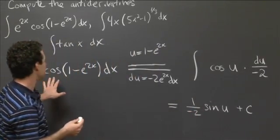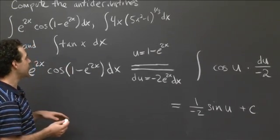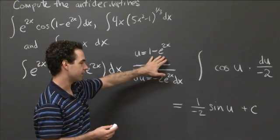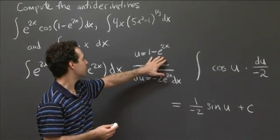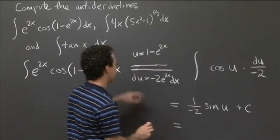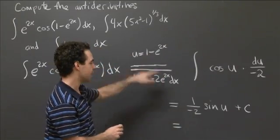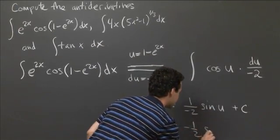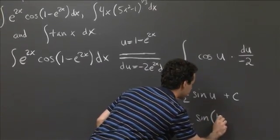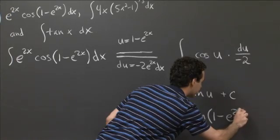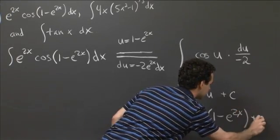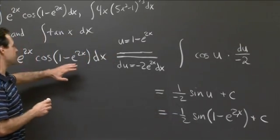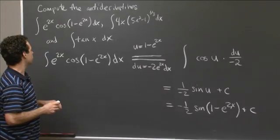And so, but my original function was in terms of x. So I want to bring everything back in terms of x. And so I need to substitute back in, get rid of u and replace it with x. So I'll just go back to what my substitution was. And I replace all my u's with it. So this is minus 1 half sine of the quantity 1 minus e to the 2x plus a constant. All right. So this is the antiderivative of this first expression here.